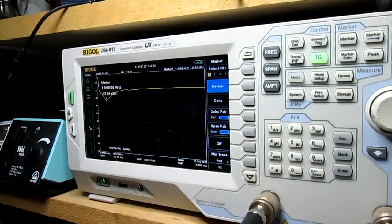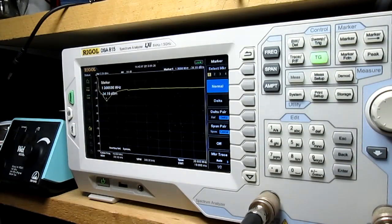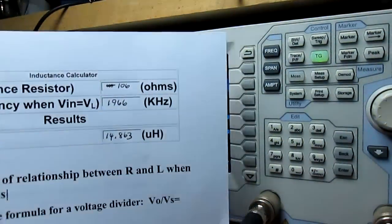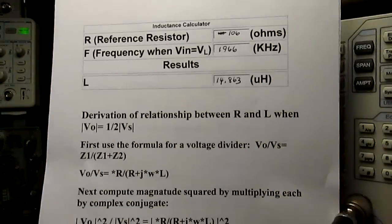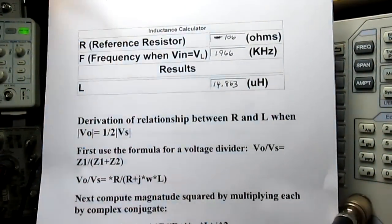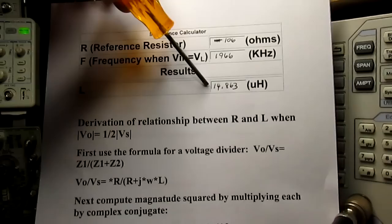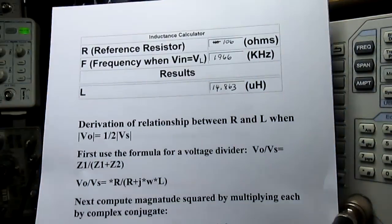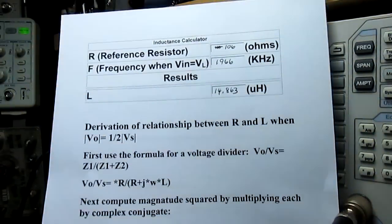The one that I did the example with, that's what's on the spectrum analyzer that you're looking at now. I had a 106 ohm resistor, I'll show you this on my paper here. So I had 106 ohms. When I used 106 ohms I came up with 1.966 megahertz and 14.863 microhenries for the inductor.